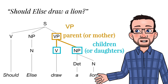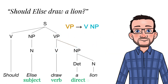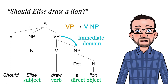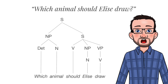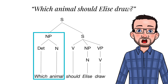The parent node is mentioned on the left-hand side of the rule and its children on the right-hand side. This question has a subject, Elisa, a main verb, draw, and a direct object, a lion. In our analysis, the noun phrase a lion is an immediate child of the verb phrase node. We say that the direct object is in the immediate domain of the verb phrase, which means there is a local relation between the verb and its direct object. In the question which animal should Elisa draw, however, the direct object is in a non-local position at the front, instead of being in the immediate domain of the verb phrase. A standard phrase structure grammar cannot describe such non-local relations.